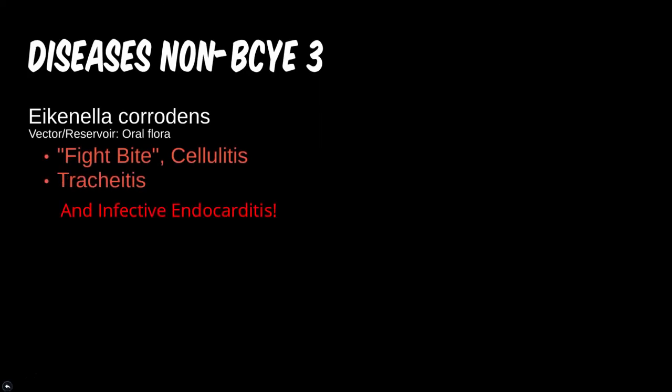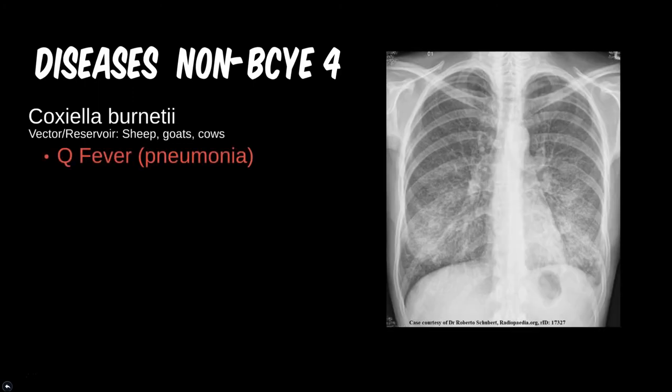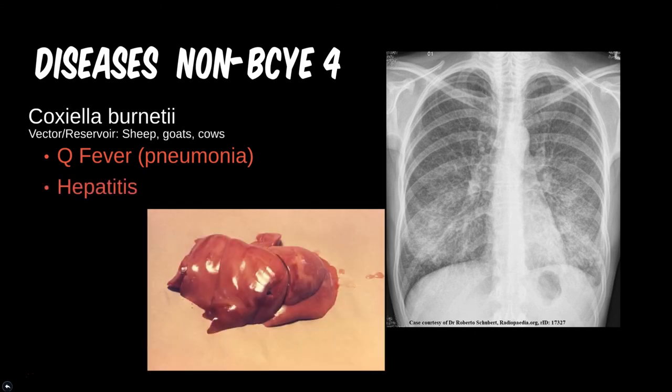Coxiella, like most of the microbes in this module, has few distinguishing points. However, it does have an interesting presentation of Q fever, which is a mild pneumonia-like illness. It is seen in many animals and may be associated with contact with their fluids, such as in a slaughterhouse or placenta after a delivery. Transmission is often from aerosol, but can be from parasite vectors as well. In rare instances, it has been associated with hepatitis.